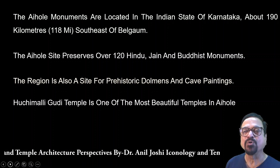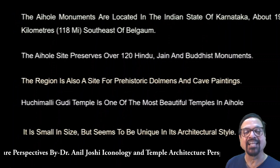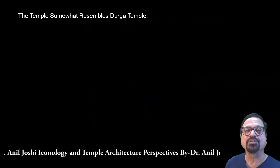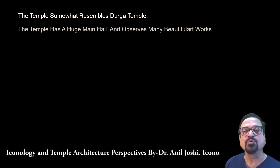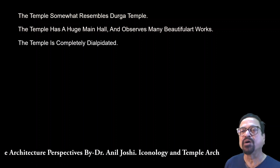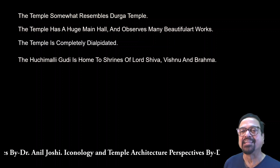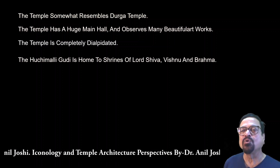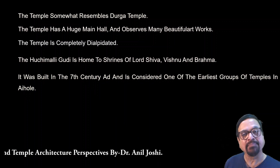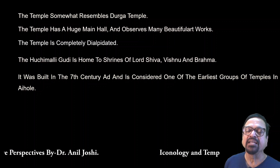The Huchimaldi Gudi temple is one of the most beautiful temples in Aihol — small in size but unique in architectural style. If you are a lover of temple architecture, it is a feast for you. The temple somewhat resembles the Durga Mata temple. The temple has a huge main hall with many beautiful works. The Huchimaldi Gudi is home to shrines of Lord Shiva, Vishnu, and Brahma — all three can be seen at the same place. It was built in the 7th century and is considered one of the earliest temples in Aihol.